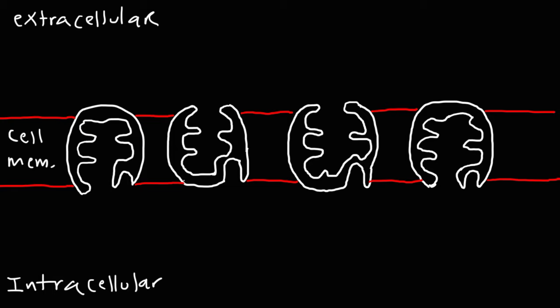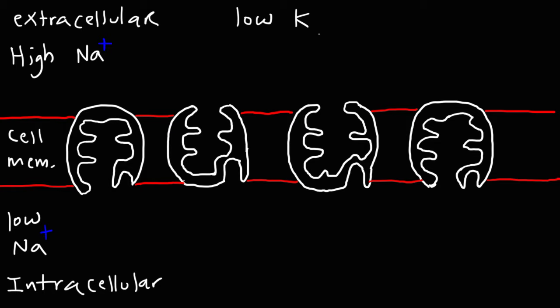The concentration of sodium ions outside of the cell is very high. The cell tries to keep the concentration of sodium ions low inside of the cell. And the reverse is true for potassium — the concentration of potassium outside of the cell is low, but the cell tries to maintain a high internal potassium concentration. So the concentration of sodium ions in the cell is low, but the concentration of potassium ions inside the cell is high with respect to the extracellular fluid.